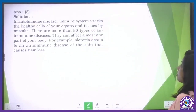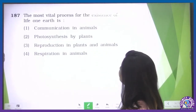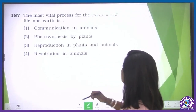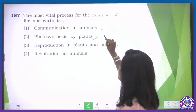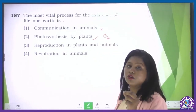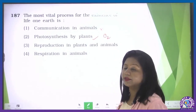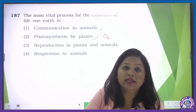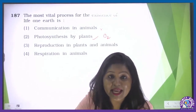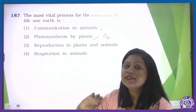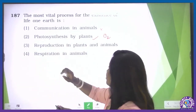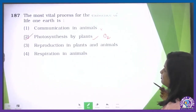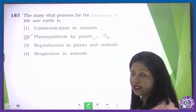The most vital process for the existence of life on earth: communication in animals — no. Photosynthesis — if photosynthesis did not occur, oxygen would not be released; and without oxygen, we could not exist. Reproduction in animals and plants — also important, but without oxygen existence is not possible, and without existence reproduction is out of the question. Respiration in plants — that is a physiological process of an organism. So the second option — photosynthesis — is our correct option.